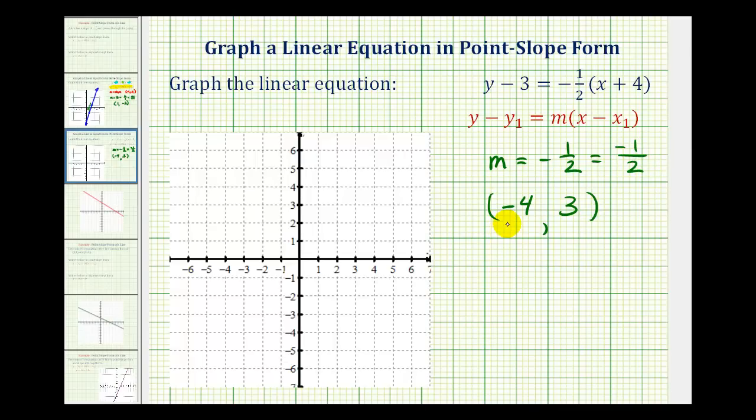Okay, so our point has coordinates negative four, three. So left four, up three here. And then using the slope of negative one over two, that tells us the vertical change is down one and the horizontal change is right two.